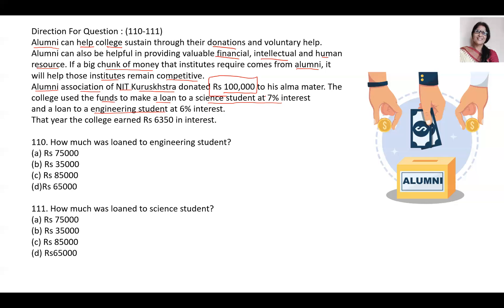The college used the funds to make loans to science students as well as engineering students. Science students received loans at 7% interest and engineering students at 6% interest, so that students can use the money if they need it and give interest to the college. The total interest earned was Rs. 6,350. The questions are: how much was loaned to the engineering student, and how much was loaned to the science student?